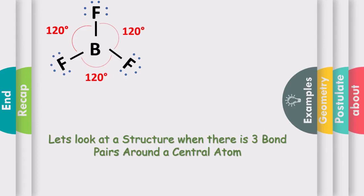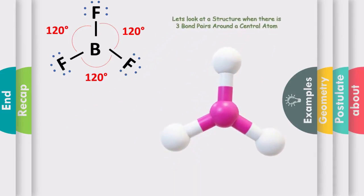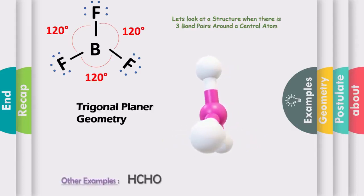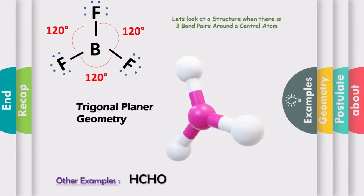Let's look at a structure where there are three bond pairs around a central atom. In boron trifluoride or BF3, the bond pairs arrange themselves at a 120 degree angle on a single plane, thus forming a trigonal planar geometry in 3D. Other examples of this type include HCHO, or formaldehyde.